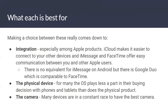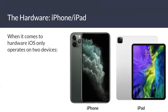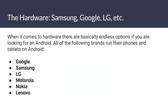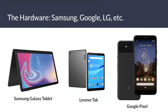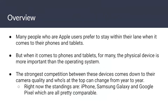For many, the operating system plays less a part in their buying decision with phones and tablets than does the physical product. Many devices are in a constant race to have the best camera. When it comes to hardware, iOS only operates on two devices: the iPhone and iPad. Android hardware is essentially anything that's not an iPhone. Many Apple users prefer to stay within their lane when it comes to phones and tablets, but for many people the physical device is more important than the operating system.